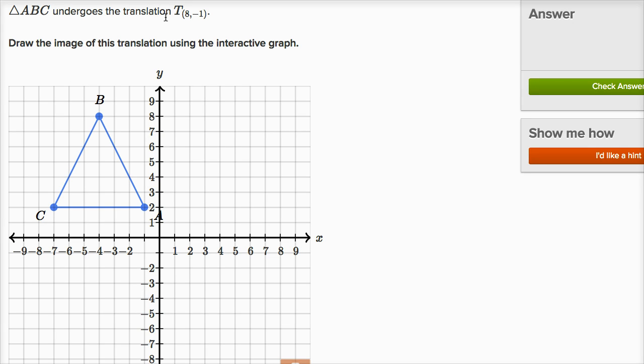Triangle ABC undergoes the translation, and we show in our, we're using the notation capital T for it. And then we tell us, we see what the translation has to be.